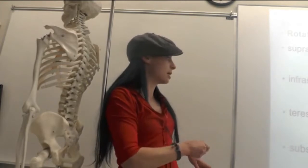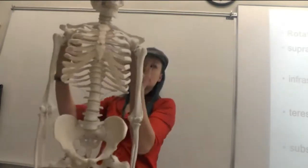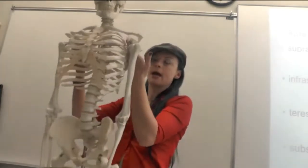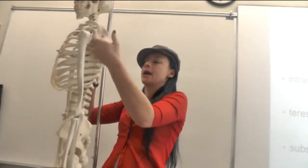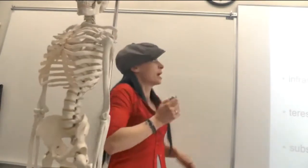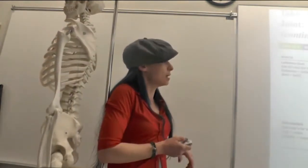And then our last one is subscapularis. And subscapularis actually sits under here in the subscapular fossa. And so there's a nice big muscle there between your scapula and your ribs. So that's another part. It's also going to help with rotation of the arm.